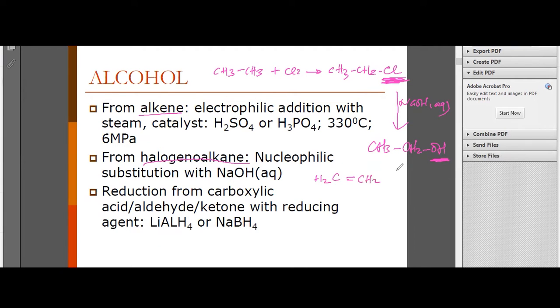Now let's see how to make alcohol from alkene. Alkene has double bond as its functional group. It can undergo electrophilic addition with steam in the presence of concentrated H2SO4 or H3PO4 with temperature 330°C and 6 MPa pressure. You can see that hydrogen will add at this carbon and OH will add to this carbon. Because this is a symmetrical alkene, no matter where the hydrogen goes, it's okay. This produces ethanol.